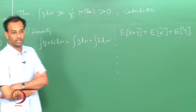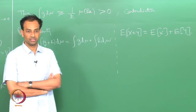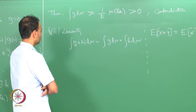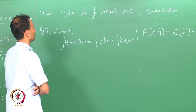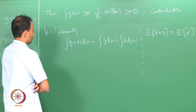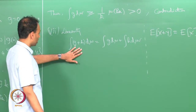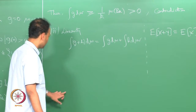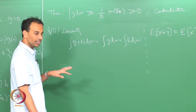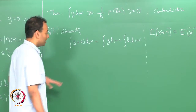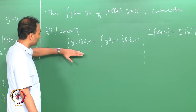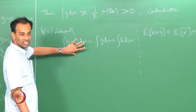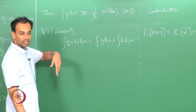This is a very fundamental property — integrals are linear operators on functions. Linearity includes addition, but there is also scaling: the integral of (a*g) d-mu equals a times the integral of g d-mu. Together these constitute linearity. This is true for any measurable functions g and h, as long as all the integrals are well defined.